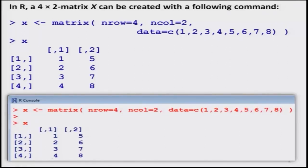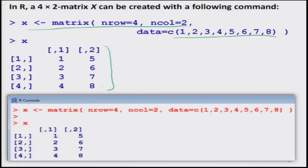You may recall that in the earlier lecture, I had created a matrix X which was a 4 by 2 matrix in which I had taken 4 rows and 2 columns and considered the data 1, 2, 3, 4, 5, 6, 7, 8. I will continue with the same matrix we constructed in the last lecture and see what different aspects of this matrix can be revealed by R commands.